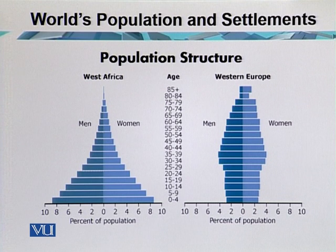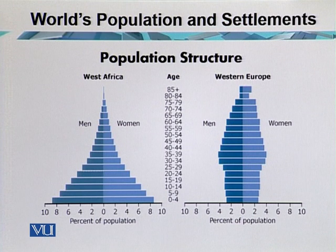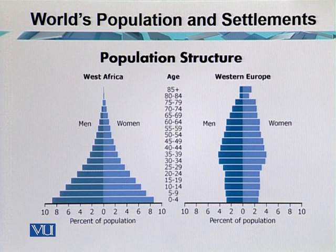A third important aspect is the age limit, which we call life expectancy. In Western European nations, life expectancy is higher — we see ages of 85 plus. Whereas in developing nations or West Africa, most deaths occur before the age of seventy, and the life expectancy is about fifty to sixty years.